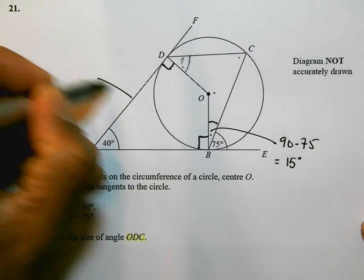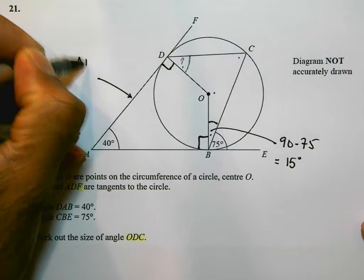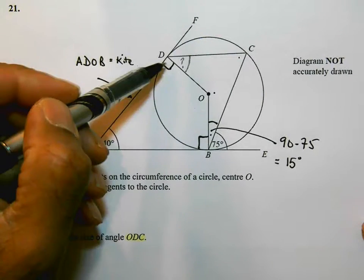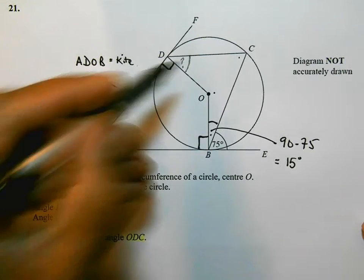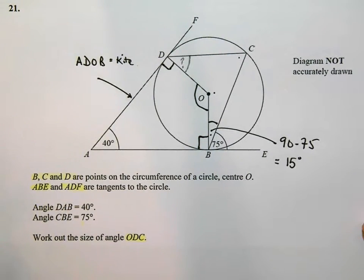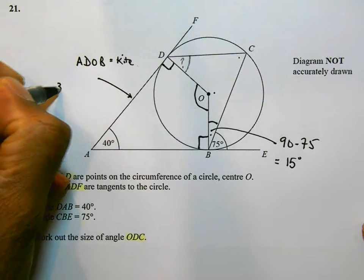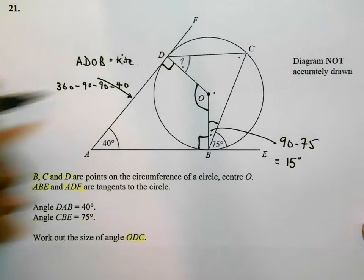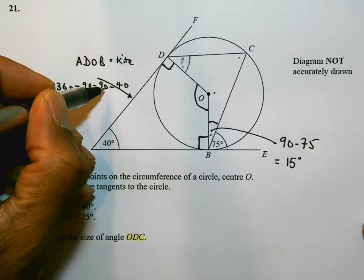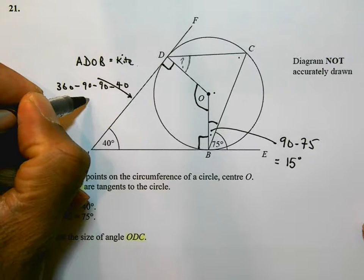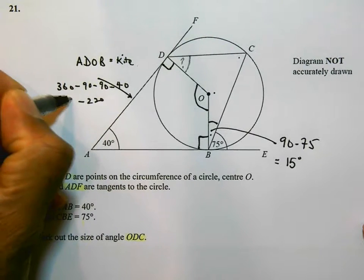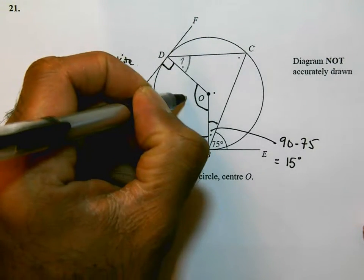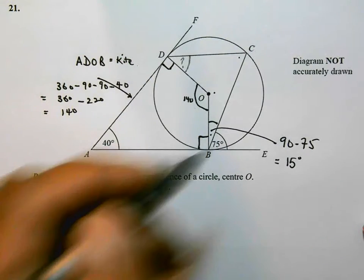In the shape ADOB, this shape is a kite. So ADOB is a kite. And I know this is 90, that's 90, that's 40. I'm going to try to work out this angle here. So that's going to be 360 take away 90 take away 90 and then take away 40. So 90 add 90 is 180, 180 add 40 is 220. So 360 take away 220 is going to be 140. So that angle there is 140.